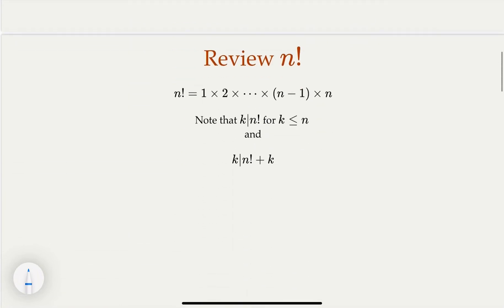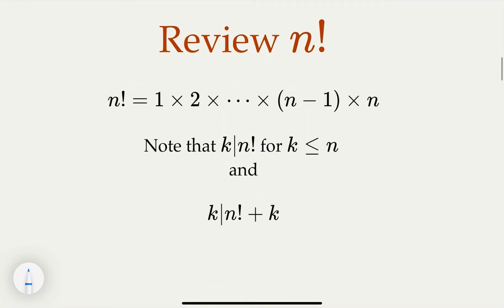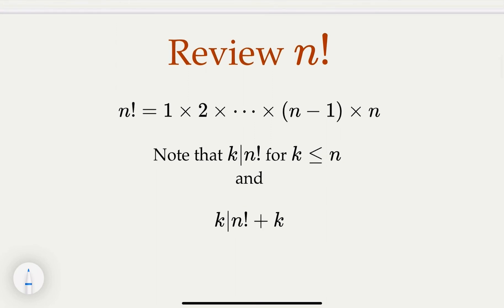Now we notice that n factorial is one times two times up to n. All the numbers smaller than n are factors of n factorial. If you add k to n factorial, k is also a factor. In other words, for k in the range 2 to n, k is a factor of n factorial plus k.